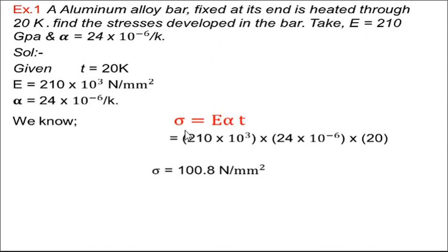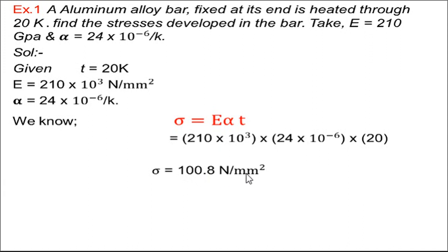For finding the temperature stresses, we use the formula sigma = E × alpha × T, which was already derived in the previous lecture. E is the modulus of elasticity, alpha is the coefficient of thermal expansion, and T is the temperature. Putting in the values: E = 210 × 10³, alpha = 24 × 10⁻⁶, T = 20. After simplification, the temperature stress sigma = 100.8 N/mm². This is a very simple problem — only this formula is needed.